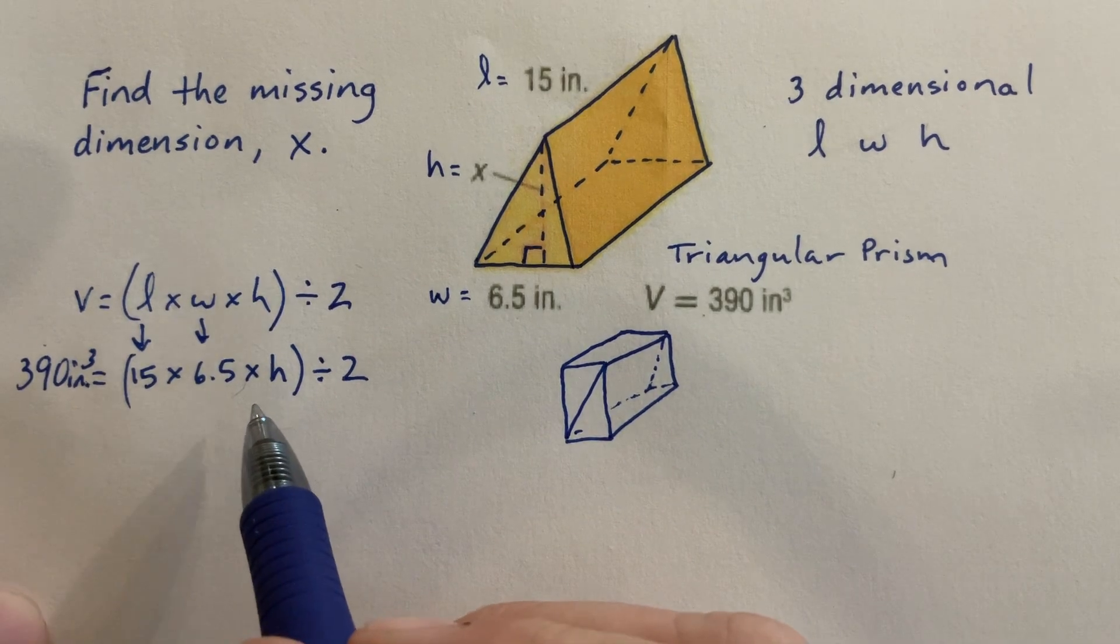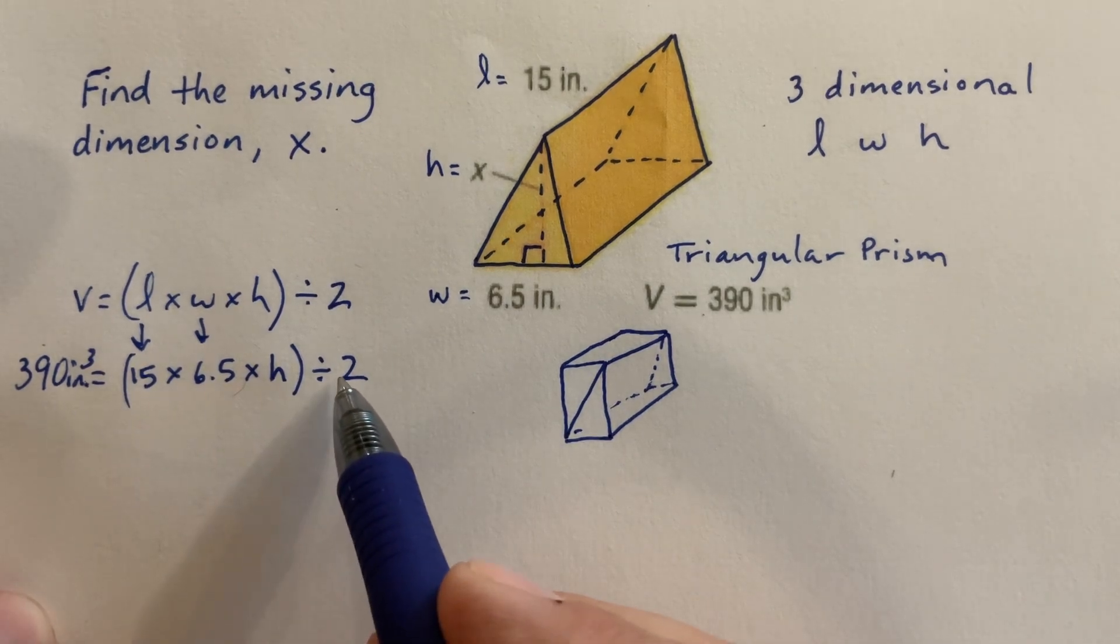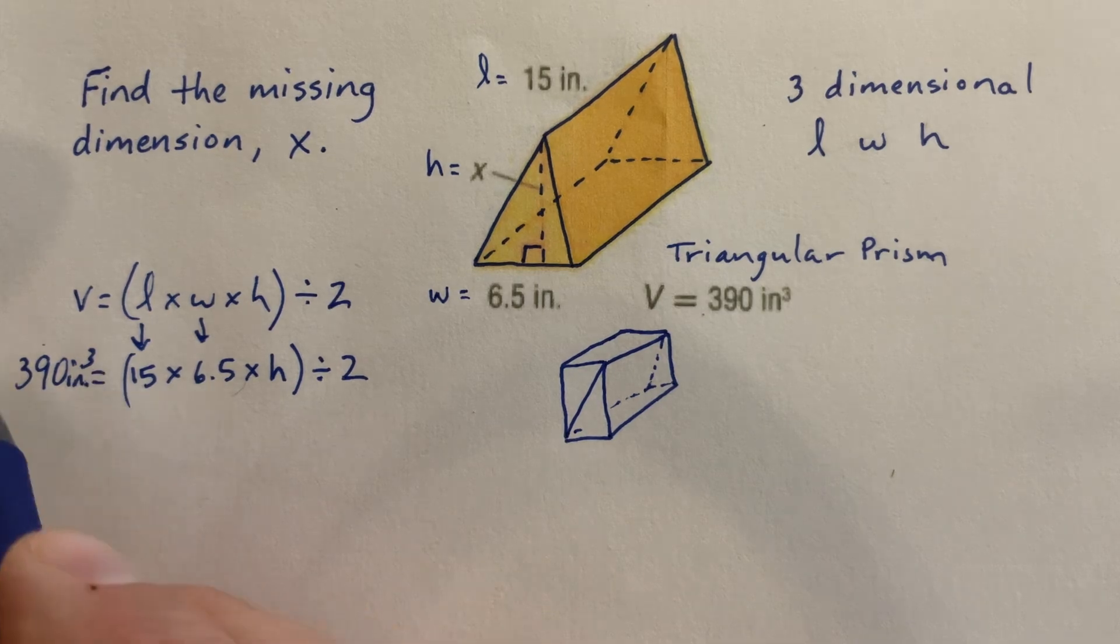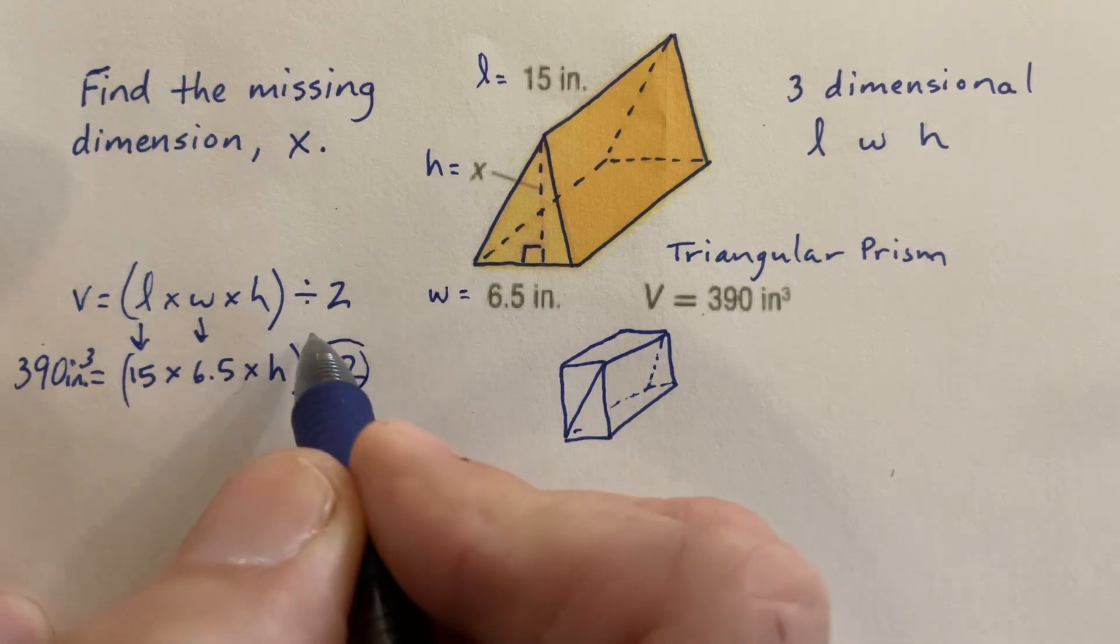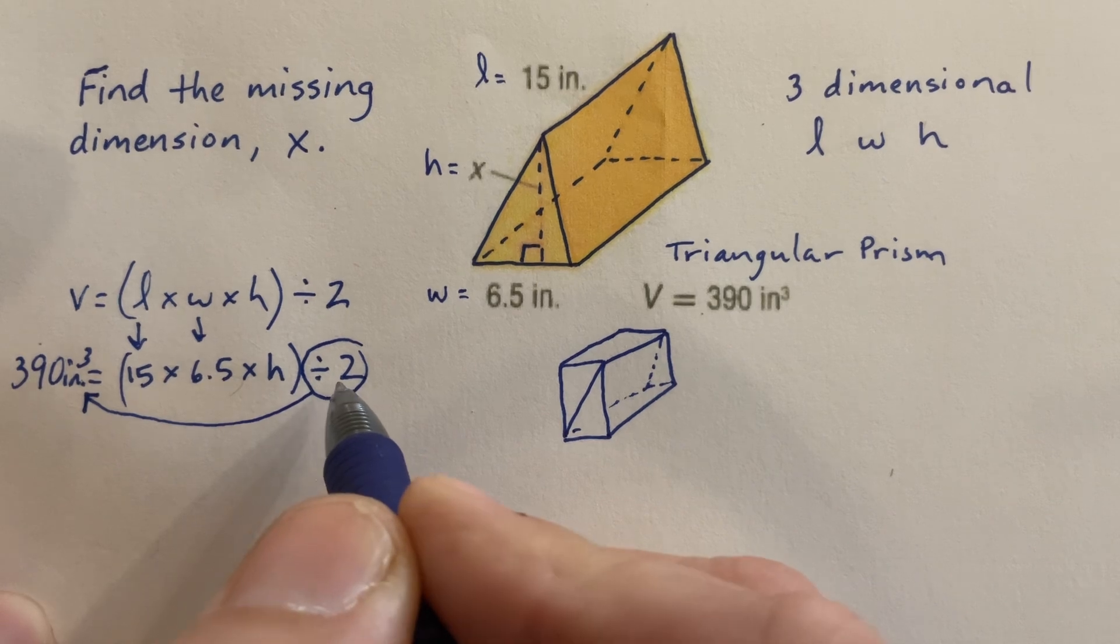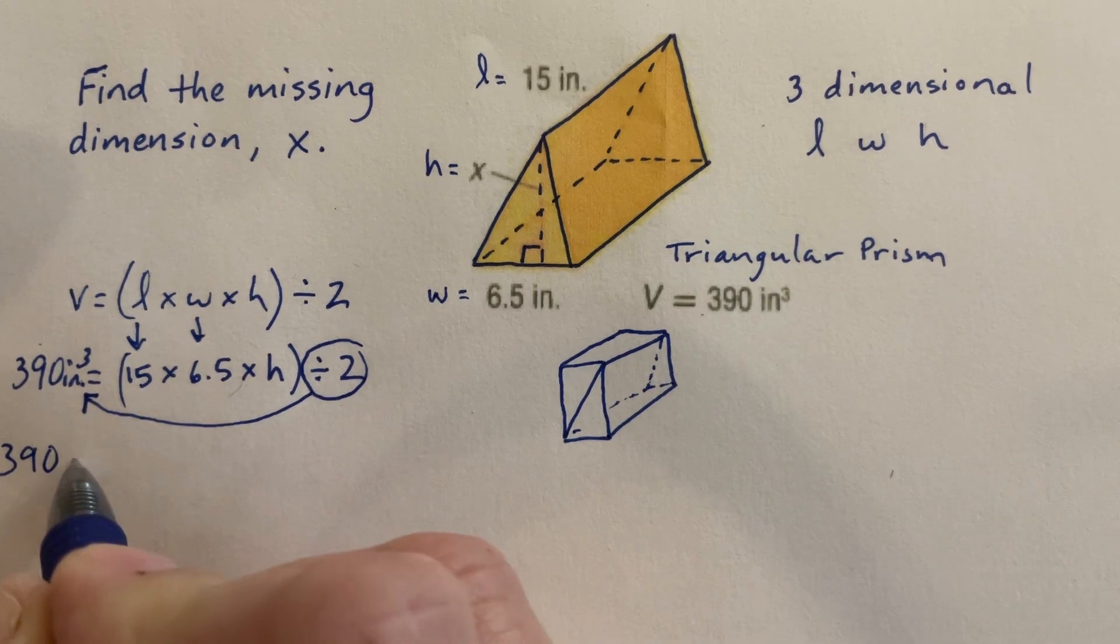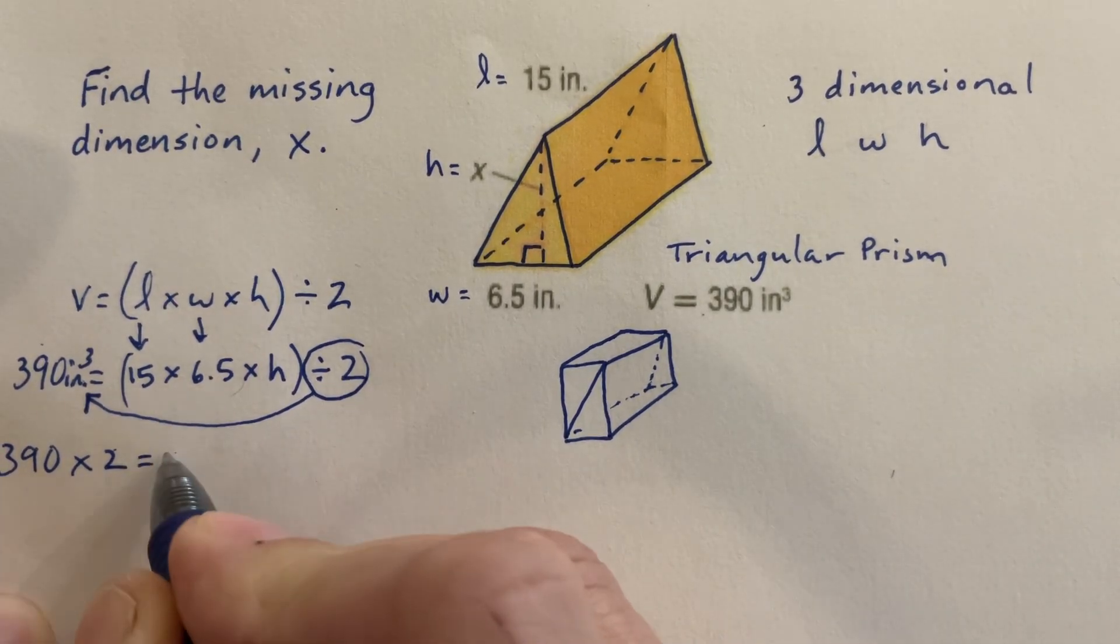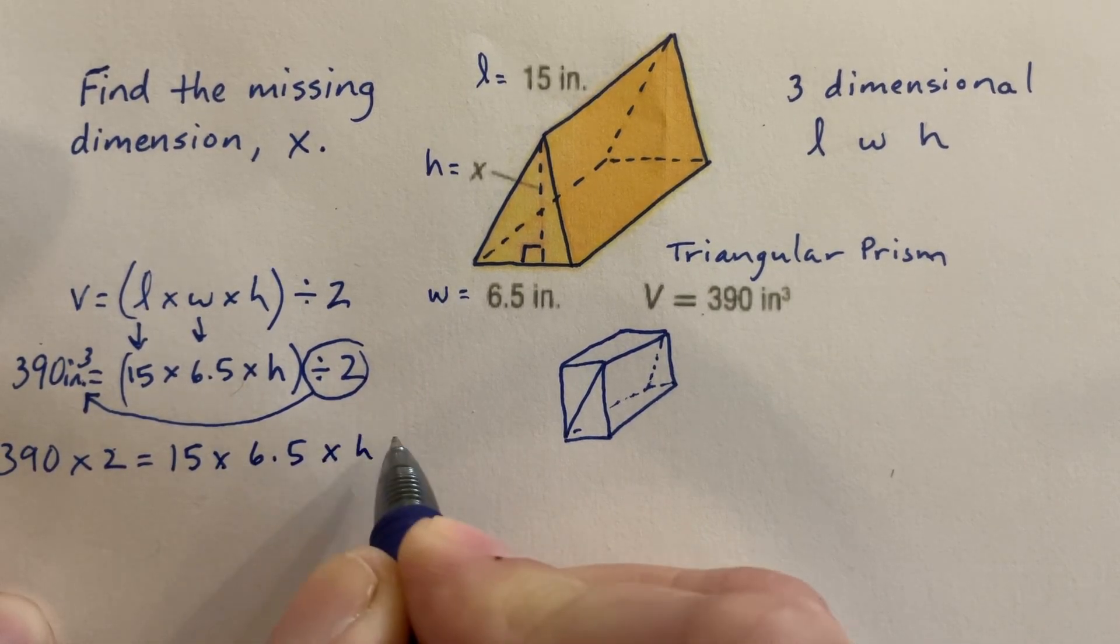So to solve for this missing angle, what we're going to use is inverse operation. Inverse operation is what allows us to move one operation from one side of the equal sign to the other side of the equal sign. So we're first going to take this divide 2, use inverse operation, put it to the other side of the equal sign. And inverse means opposite. So we're going to take the 390 and do the opposite of divide 2, multiply 2. We just moved it to the other side.